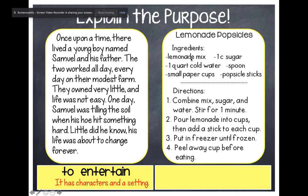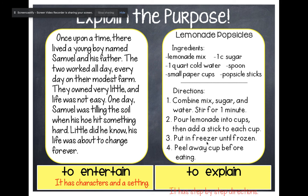'Lemonade Popsicles. Ingredients: lemonade mix, cold water, cups, sugar, spoons, and popsicle sticks. Directions: combine mix, sugar, and water. Stir for one minute. Pour lemonade into cups, then add a stick to each cup. Put in the freezer until frozen, and peel away the cup before eating.' We can look at the structure of this one and see it gives step-by-step directions, which means this one is meant to explain.